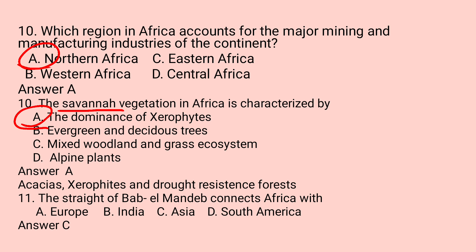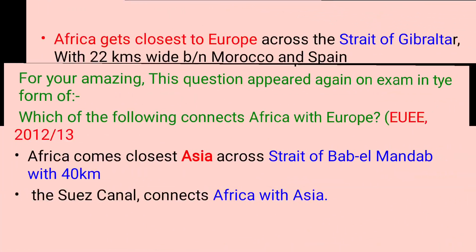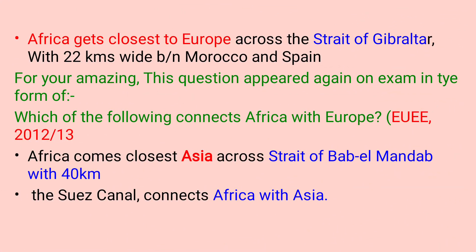Question number twelve: The Strait of Bab-el-Mandeb connects Africa with — A. Europe. B. India. C. Asia. D. South America. Africa is closest to Europe across the Strait of Gibraltar, which is 22 kilometers wide between Morocco and Spain.